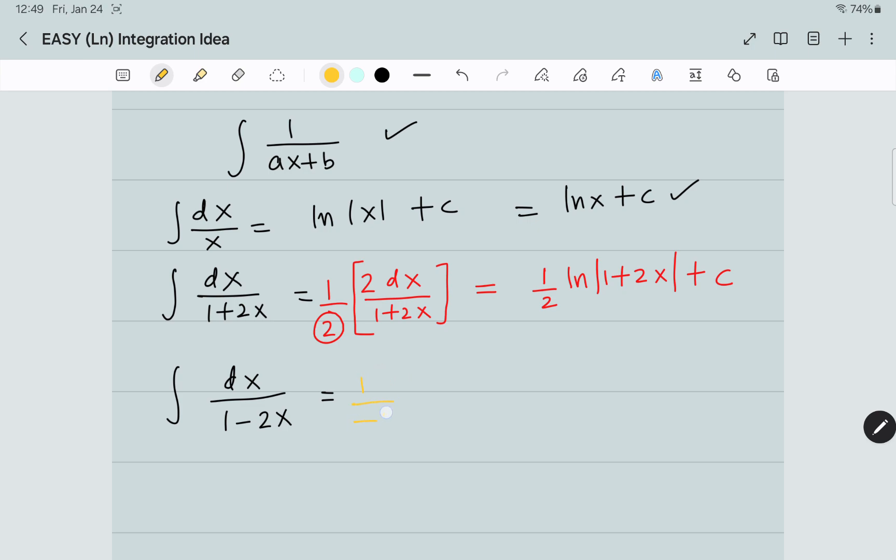I am going to write 1 divided by minus 2 and adjust minus 2 in the numerator, giving minus 2 dx over 1 minus 2x. This equals negative 1 over 2 ln absolute value of 1 minus 2x plus c.